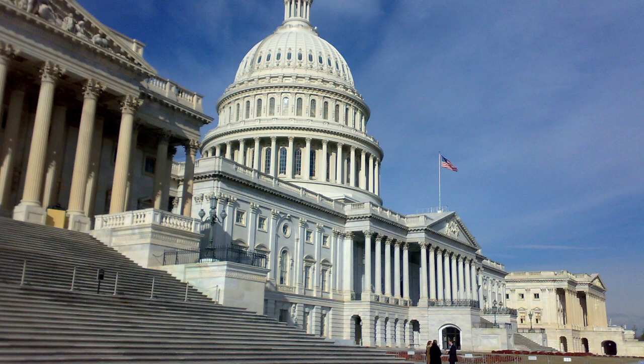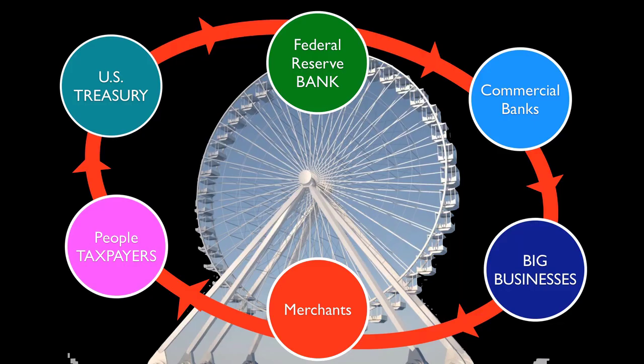It is the law that creates a dollar as a standard unit of measurement and allows the same word to mean very different things. The dollar structure is a big loop. Dollars flow from the Federal Reserve System to the commercial banks, then to big businesses, merchants, and people. At every step of the way, a different dollar is created because dollars represent debt, and the solvency of the subscriber of the debt matters.